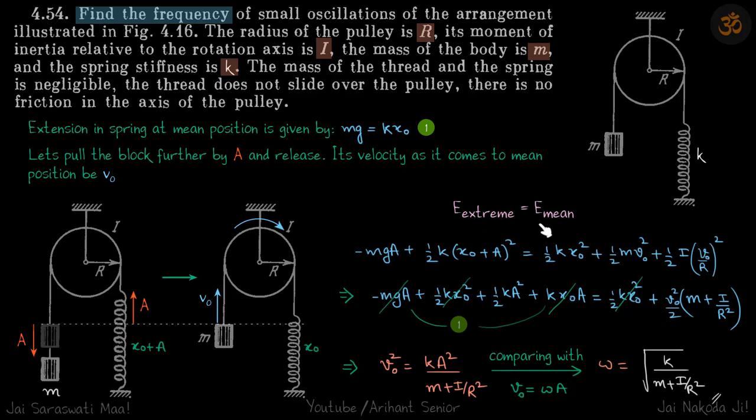Let's write the equation: energy at extreme equals energy at mean. Energy at extreme will be -mg(x₀ + a), taking the mean position as reference for gravitational potential energy, plus ½k(x₀ + a)².